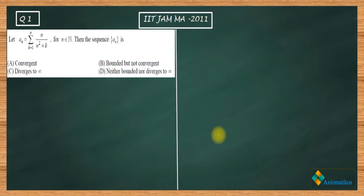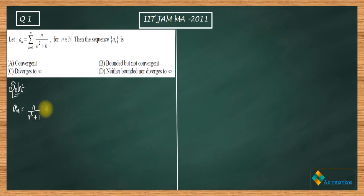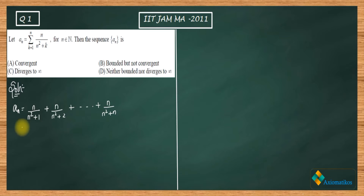So what we have is this sequence a_n. Our first step to solve this question is to understand the sequence, and in order to do that we have to write it explicitly. So I am writing the sequence explicitly: it's n/(n²+1) + n/(n²+2) + ... up to n/(n²+n). This is your sequence.